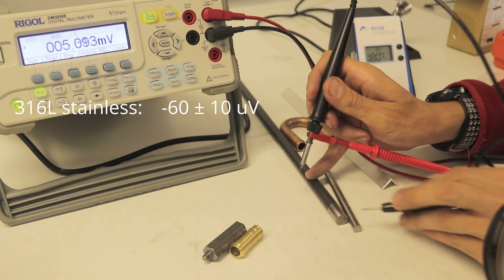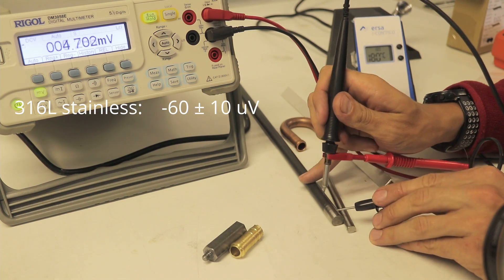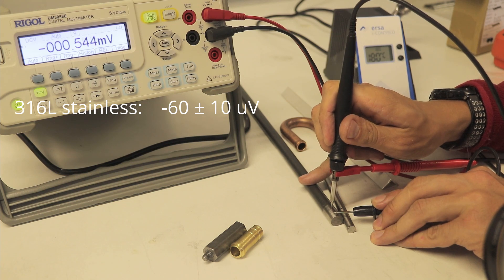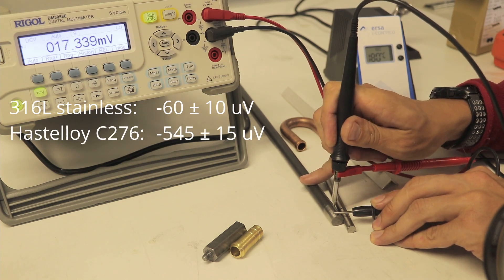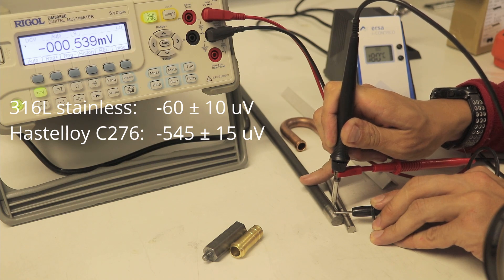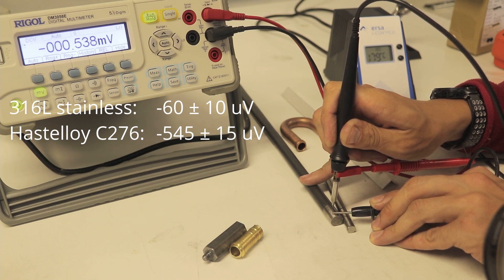Now let's have a look at the host alloy, nickel alloy. I am doing the same. And we have minus 550. You can see the difference is huge—minus 50 to minus 550 microvolts.